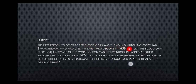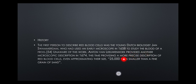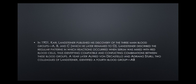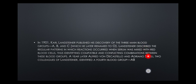The first person to describe the red blood cell was the young Dutch biologist Jan Swammerdam, who used an early microscope in 1658 to study the blood of a frog. Unaware of this work, the well-known Antonie van Leeuwenhoek provided another microscopic description in 1674, this time giving a more precise description of the red blood cell and even approximating their size as 25,000 times smaller than a fine grain of sand. In 1901, Karl Landsteiner published his discovery of the three main blood groups A, B, and C — which he later renamed O — and described the regular patterns of reactions when serum was mixed with red blood cells, identifying compatible and conflicting combinations.